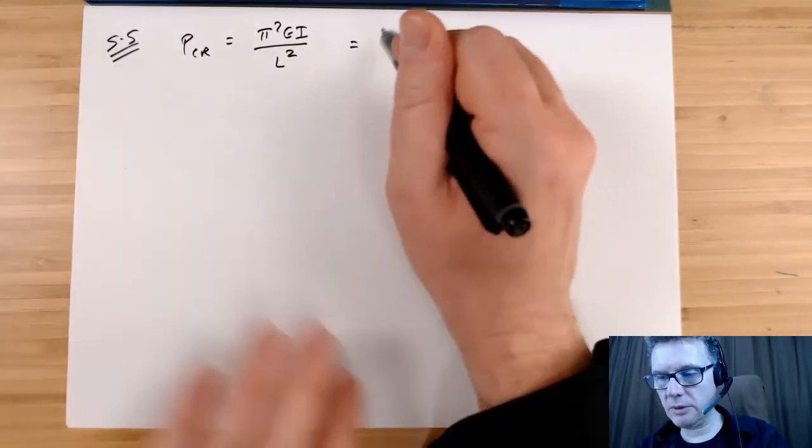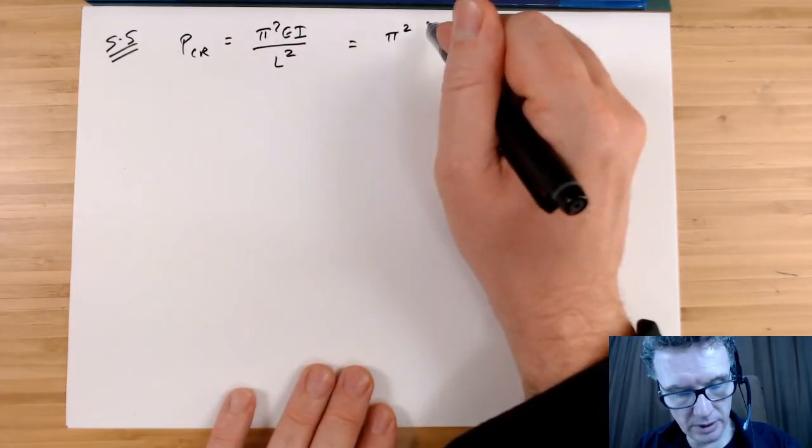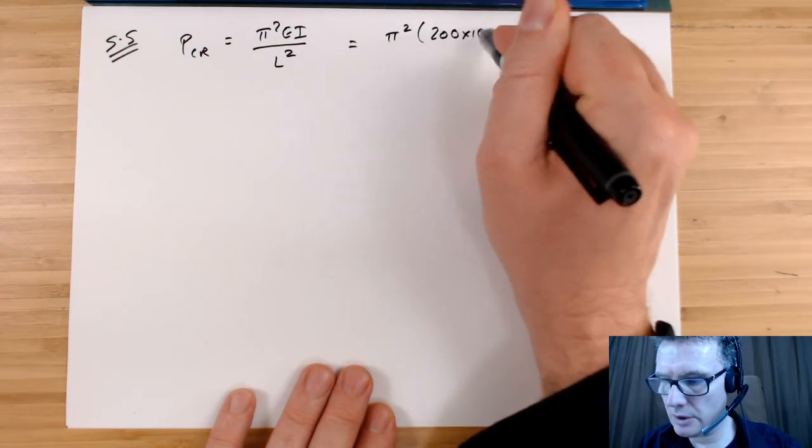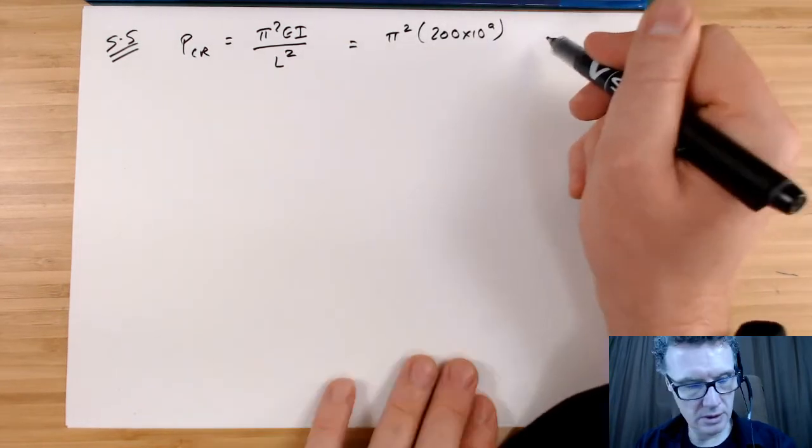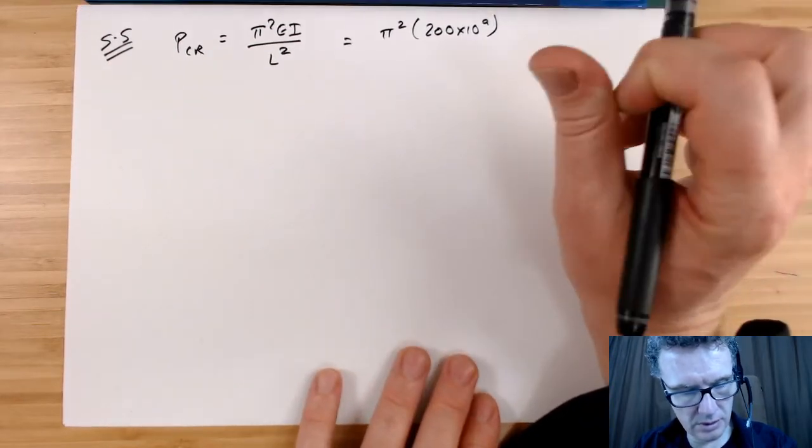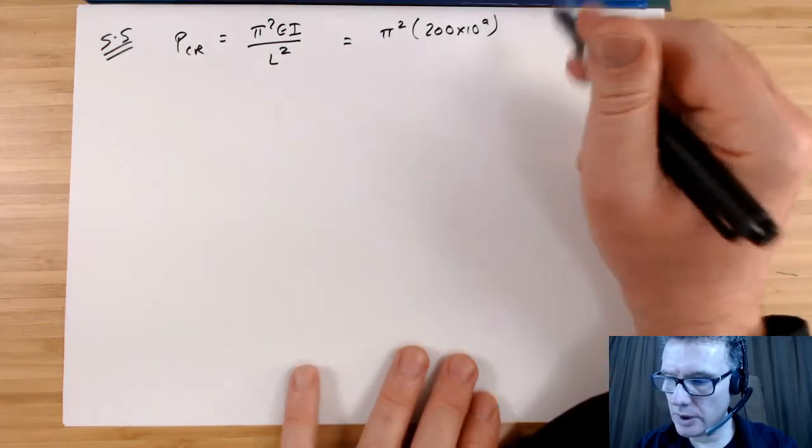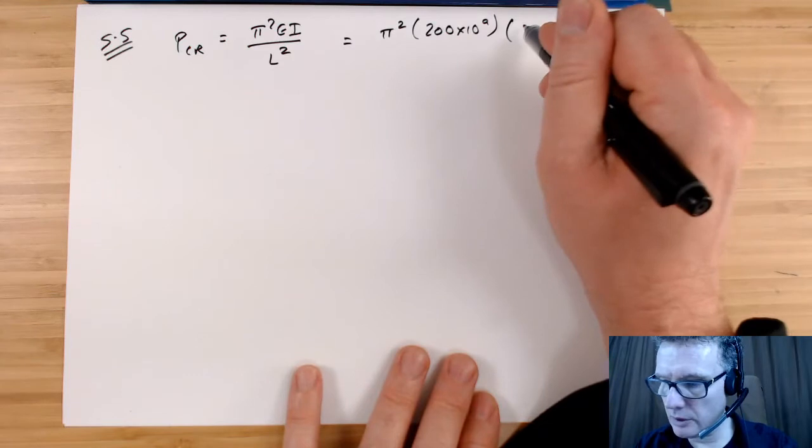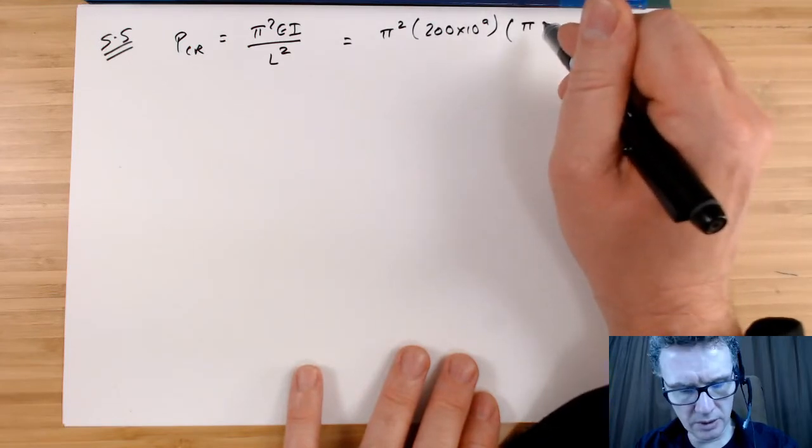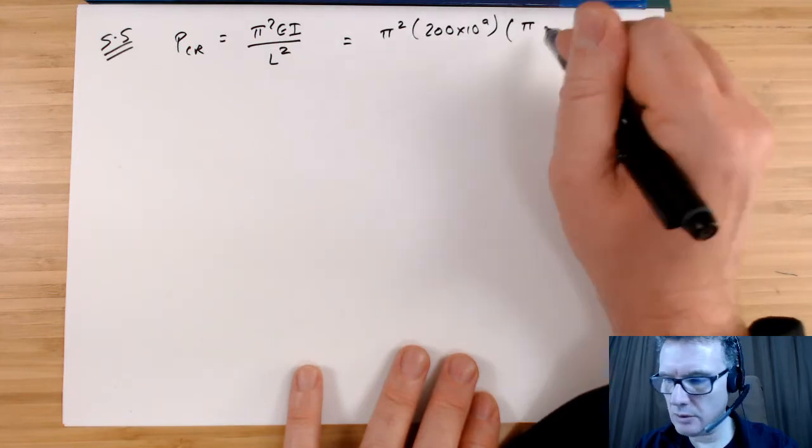So what we got here? I've got π², I've got 200 giga. Have I got the I? No, but that's easy enough. So we've got π, and the rod is 32 millimeters diameter.